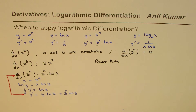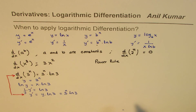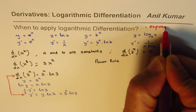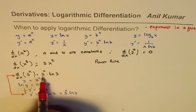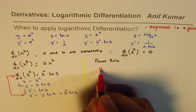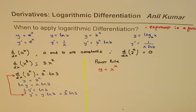So what you notice here is that the exponent is a variable or a function. In general, you apply logarithmic differentiation when the exponent is a function. In this particular case the base was a constant, but you could also have a situation where the base is also a function — that is the main case where we apply logarithmic differentiation.